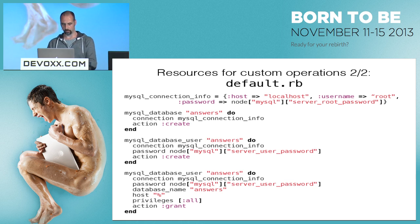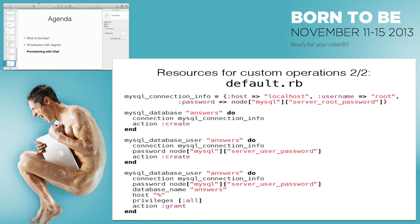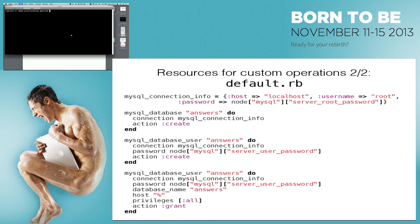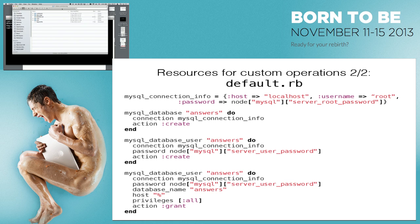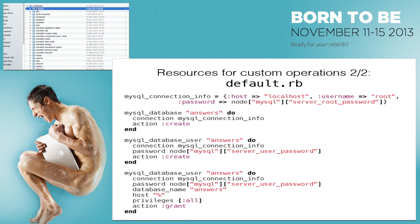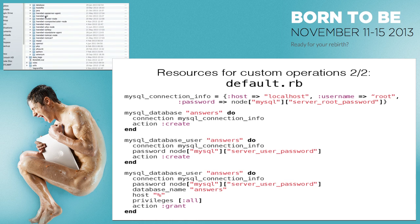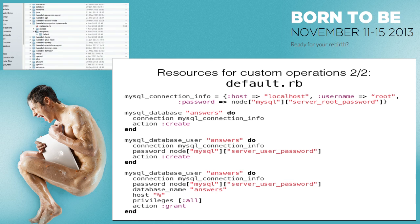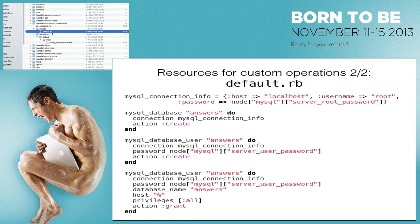Let me now show you what this looks like in real life. I've got my Vagrantfile here, and alongside it I have a 'cookbooks' directory that contains all the Chef recipes. These are the same cookbooks I mentioned: the Apache cookbooks, for instance. The Chef website has a whole community where you can download existing cookbooks that have been written beforehand, which you can either customize or just reuse by providing the variables you need.